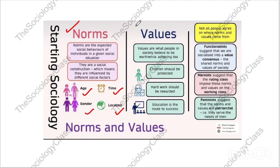Values are called general guidelines because they can be the same for everyone — for example, 'children should be protected,' 'hard work should be rewarded,' 'education is the root to success' — these are general things everyone agrees on. Whatever is specific and changes according to age, location, or gender — that is our norms.